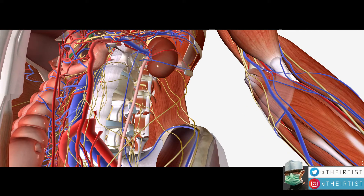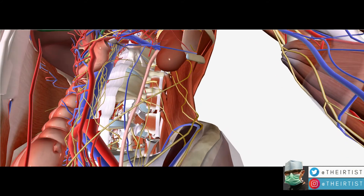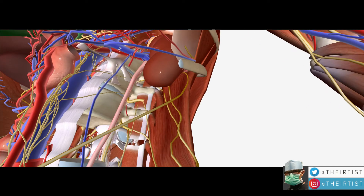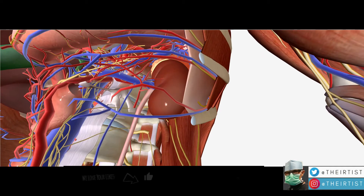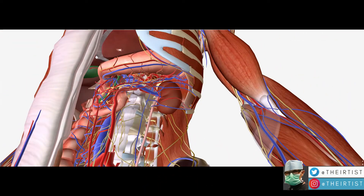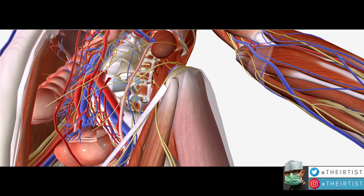One other cause of left-sided varicocele is called the nutcracker syndrome. Nutcracker syndrome happens when a large artery going to the bowel compresses the left renal vein. The buildup of pressure in that left renal vein then affects the spermatic vein — this is a more indirect mechanism of left-sided varicocele.